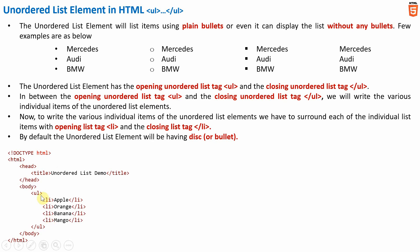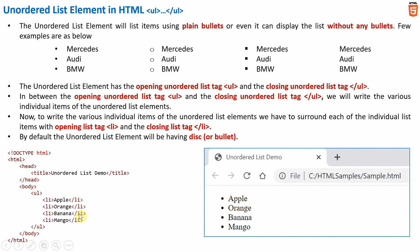In the sample code snippet we have an opening unordered list element and a closing unordered list element. In between them we have listed various items like apple, orange, banana, and mango. Each listed item is surrounded with an opening list tag li and a closing list tag. When this code is rendered in a browser it will appear as shown. Since we have not specified the list item marker, by default it will be displayed as bullet or disk.